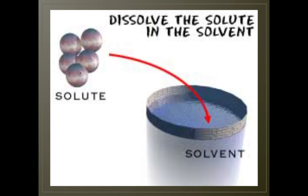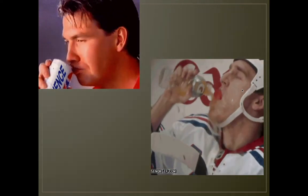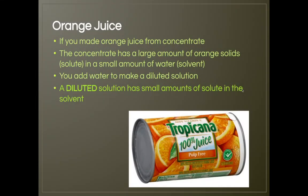You dissolve the solute in the solvent. With orange juice, if you made orange juice from concentrate, the concentrate has a large amount of orange solids — the solute — and a small amount of water, the solvent. You add water to make a diluted solution. A diluted solution has a small amount of solute in the solvent.